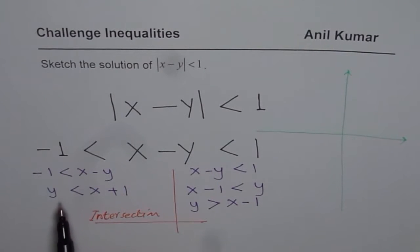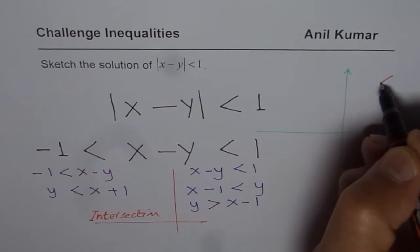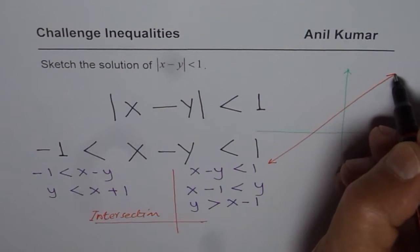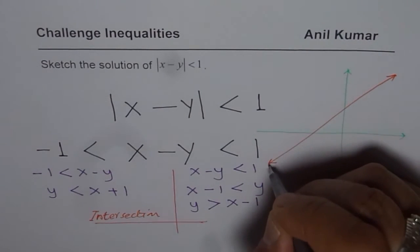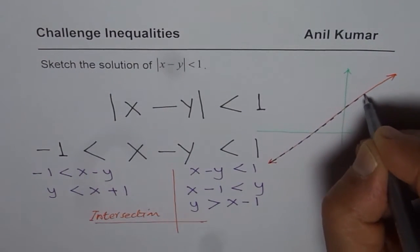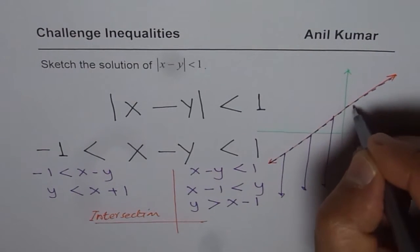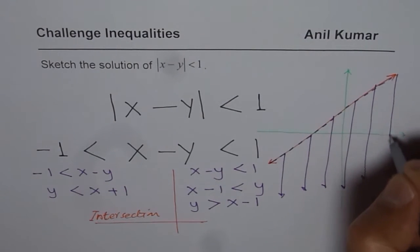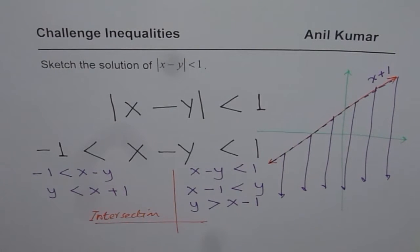So, let us sketch the line. First one is y less than x plus 1. Slope is 1. Y intercept is 1. Let me just draw a rough sketch. This is right. Now, in this, the solution is less than. Y is less than. That means this line is not included. So, I am shading it dotted line, not included. And the solution is downwards. Do you see that? The solution is downwards. And this line is x plus 1. And that is how we do the first line.